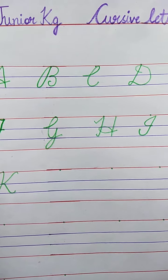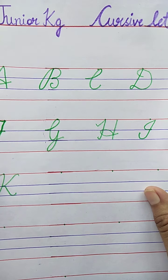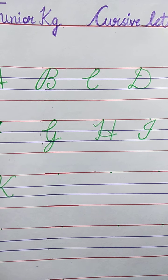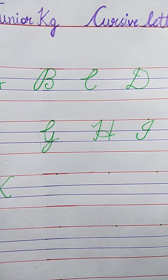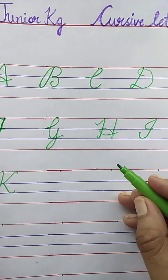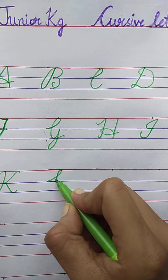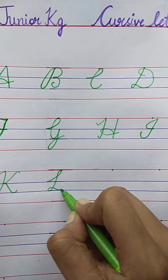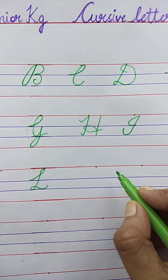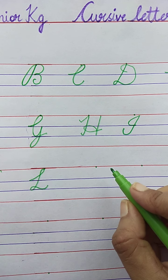Now, tell me the next letter. L. L for Lion. Very good. Now draw with me. L for Lion: curve line, loop, slanting line, and again curve line. L for Lion. The spelling of Lion is L-I-O-N. Lion.